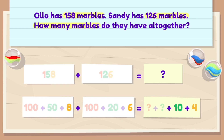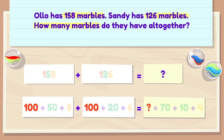Now let's add the tens. 50 plus 20 is 70. Then let's add the hundreds. 100 plus 100 equals 200.